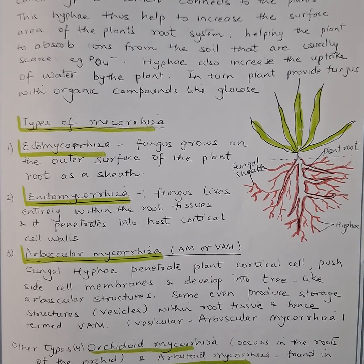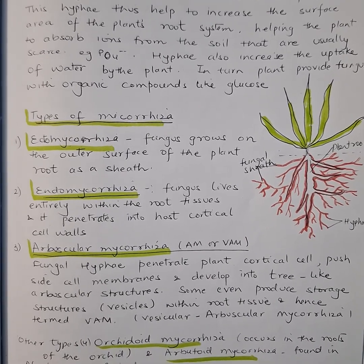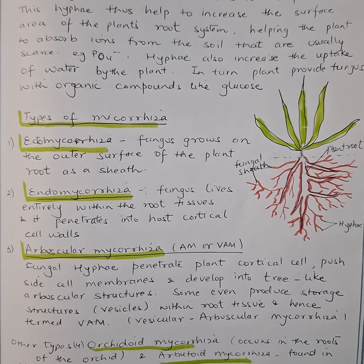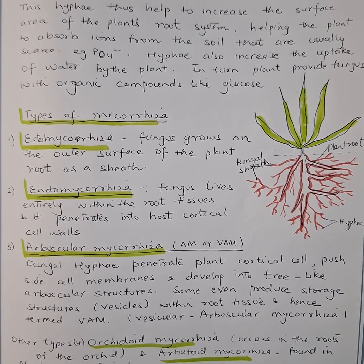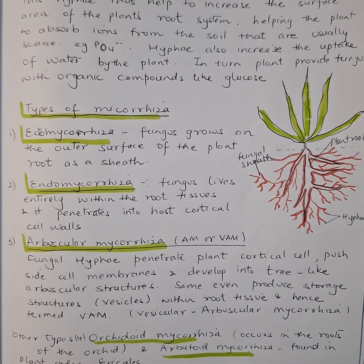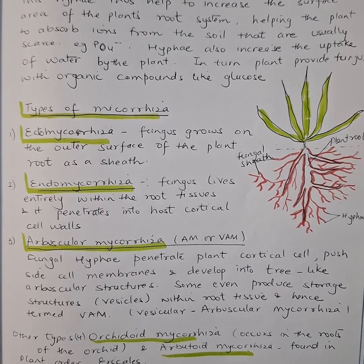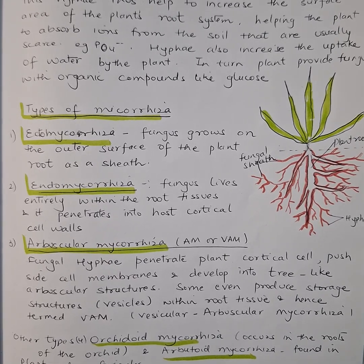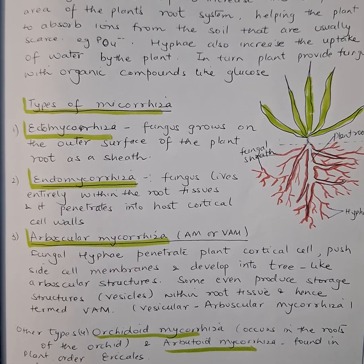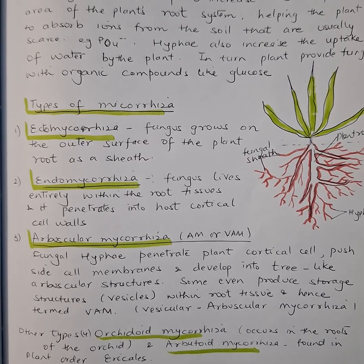There are different types of mycorrhiza. The first is endomycorrhiza — as the name indicates, 'endo' means within. In this case, the fungi live entirely within the root tissue, penetrating into the host cortical cell walls.